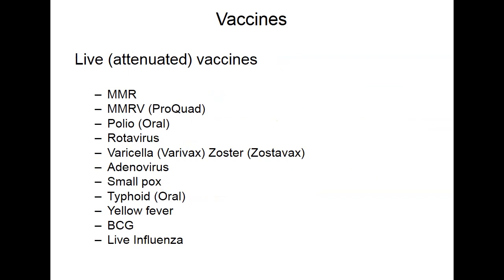The second vaccine category uses components such as specific protein subunits or toxoids. Examples of live attenuated vaccines include varicella zoster vaccine, which has also been combined with MMR; however, that combination is not widely used because adding varicella to MMR has been associated with more febrile illness and in some cases epilepsy. There are separate varicella and zoster vaccines.